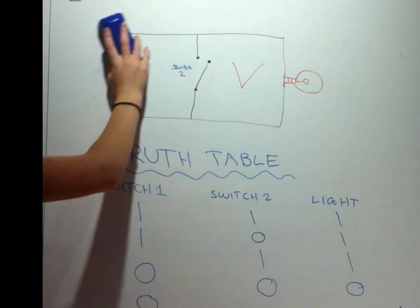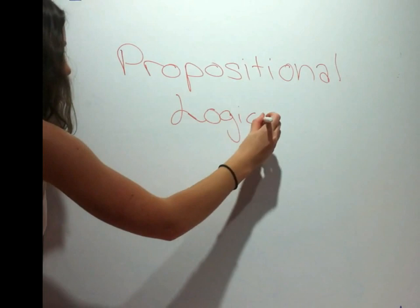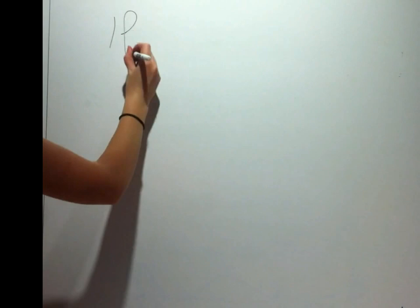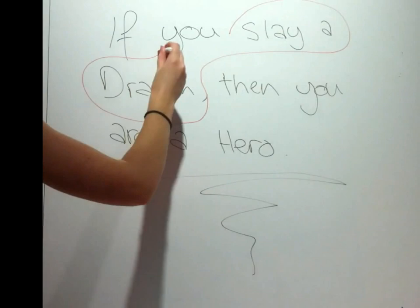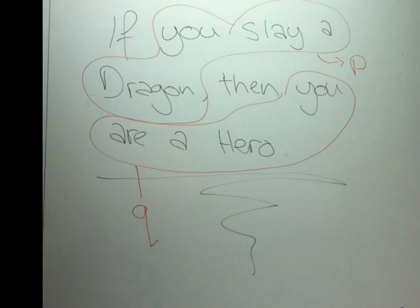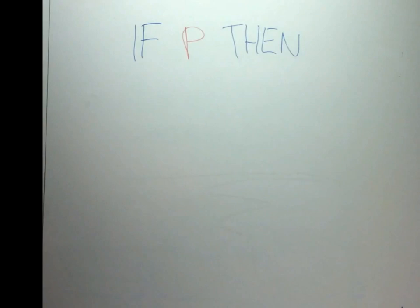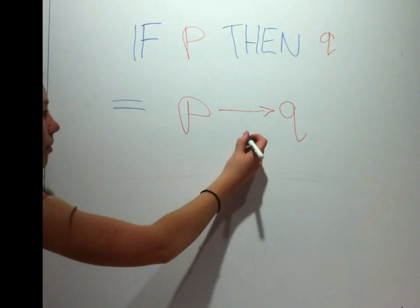Now that we have looked at AND and OR, we can move on to propositional logic, or in other words, statements. If we take the proposition: if you slay a dragon, then you are a hero — we can split this up into two sections. The first we call P, the second we call Q. From this example, P would be 'you slay a dragon', and Q would be 'you are a hero'. Hence we can say that if P, then Q, also written as P implies Q. Implies is usually represented as an arrow.